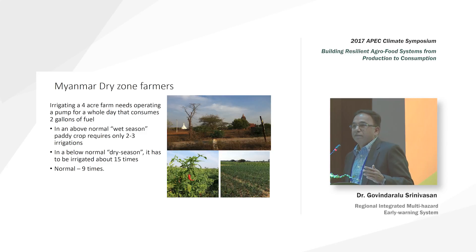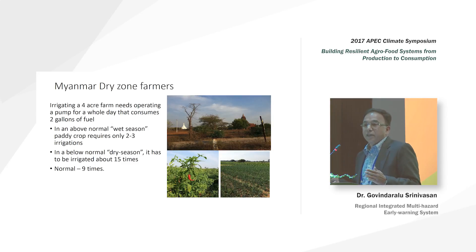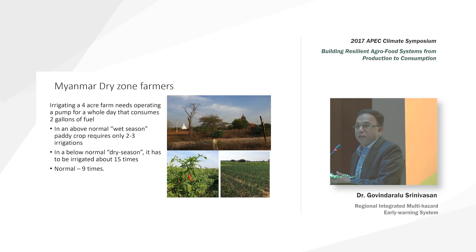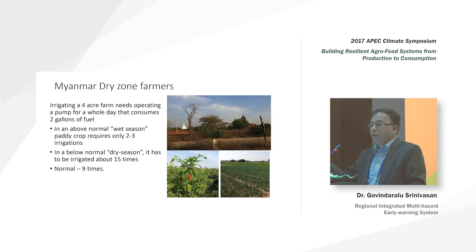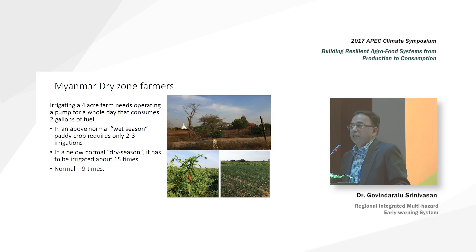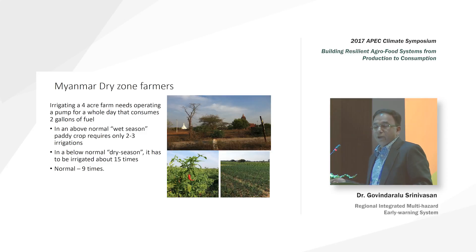What I'm saying is that farmers have sufficient know-how at their local scale on what they want to do. The enabling and empowering system has to be created to deliver proper climate information which helps them decide and use it not just as a piece of information but as knowledge. That is what is happening in climate field schools, which I'll talk about later.